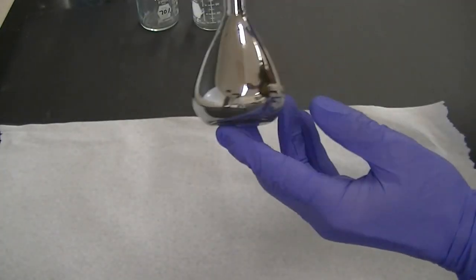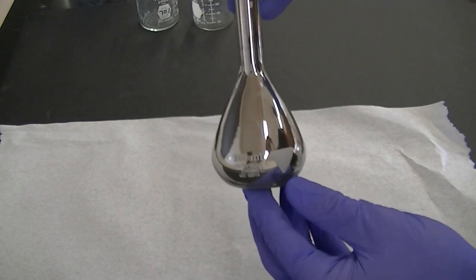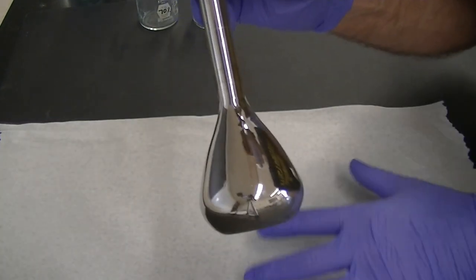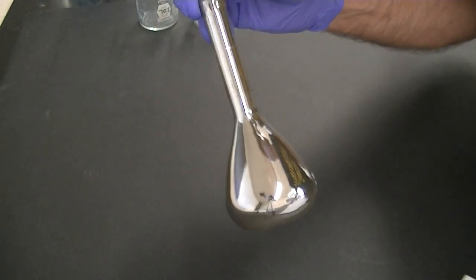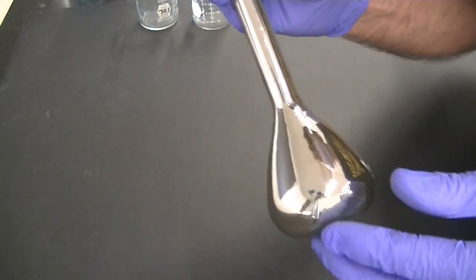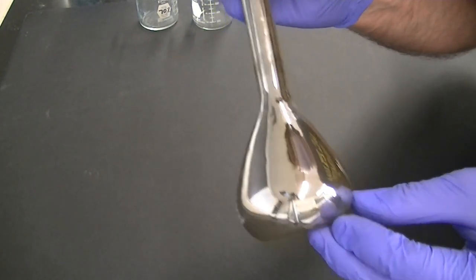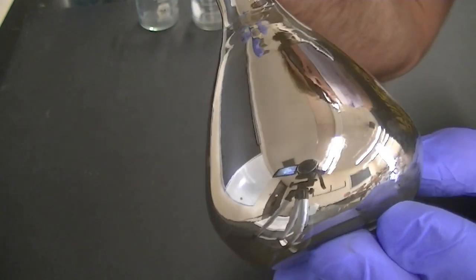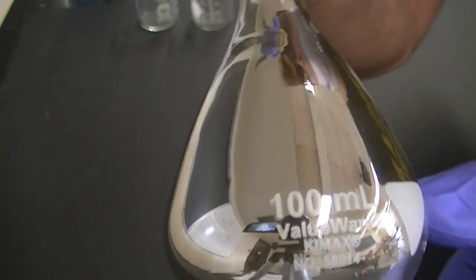Would you look at that! The experiment worked! The sugars in the Powerade were able to convert the silver ions into silver metal. This experiment was really fun to try out. Hey look! The mirror is shiny enough that I can see my video camera in the reflection!